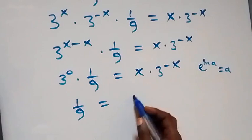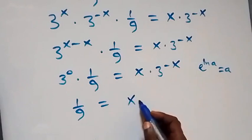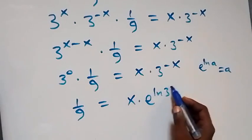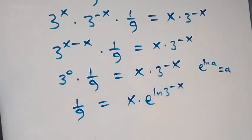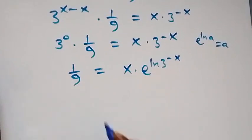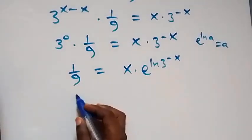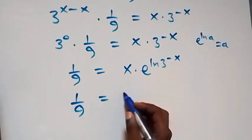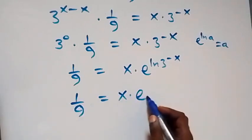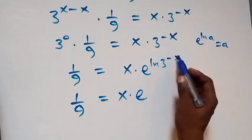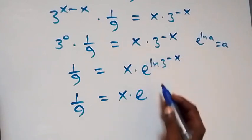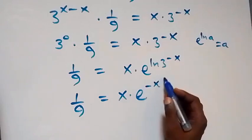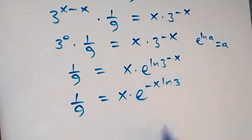We have x times e raised to power ln 3, with a superscript minus x on this side. Then 1 over 9 equals x times e raised to power minus x ln 3. From the law of logarithms, minus x can come down, giving us minus x ln 3 in the exponent.